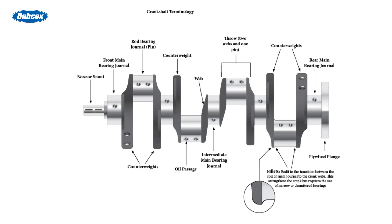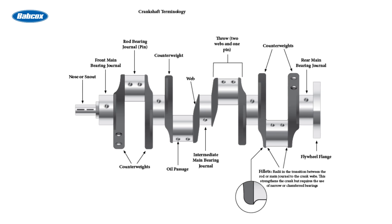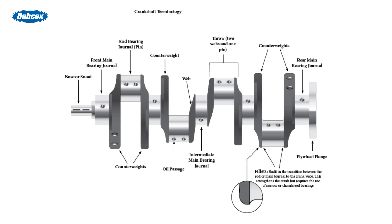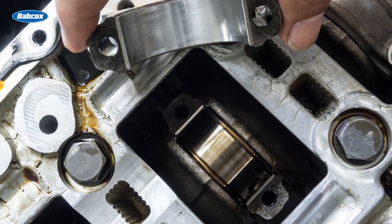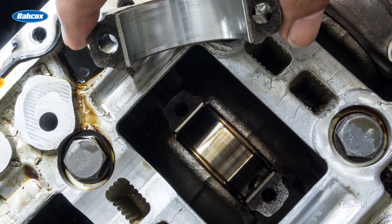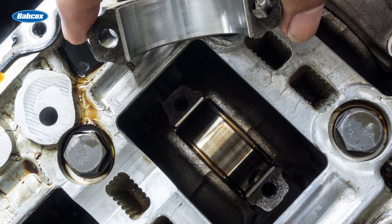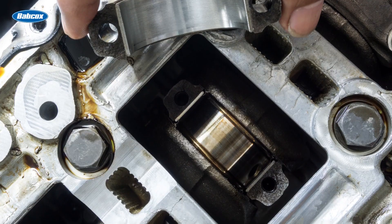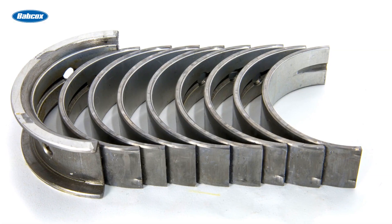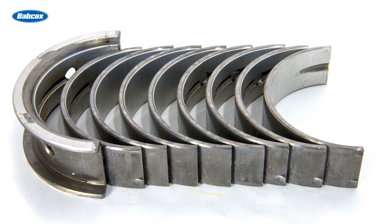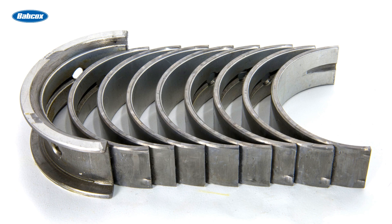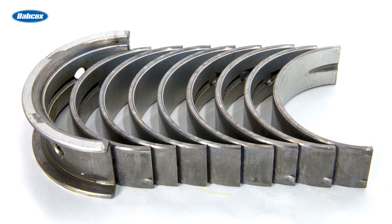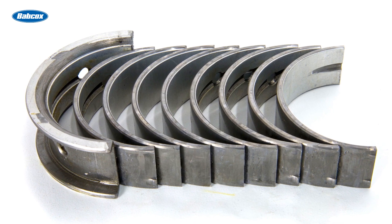Crankshafts have many different features, which are often referred to during service or when ordering related components. The crankshaft is mounted in the engine block and held in place by main caps, which are bolted to the block. Bearings protect the crankshaft at these mounting locations, which are precisely machined to match the bearings, and these points are referred to as the main bearing journals.